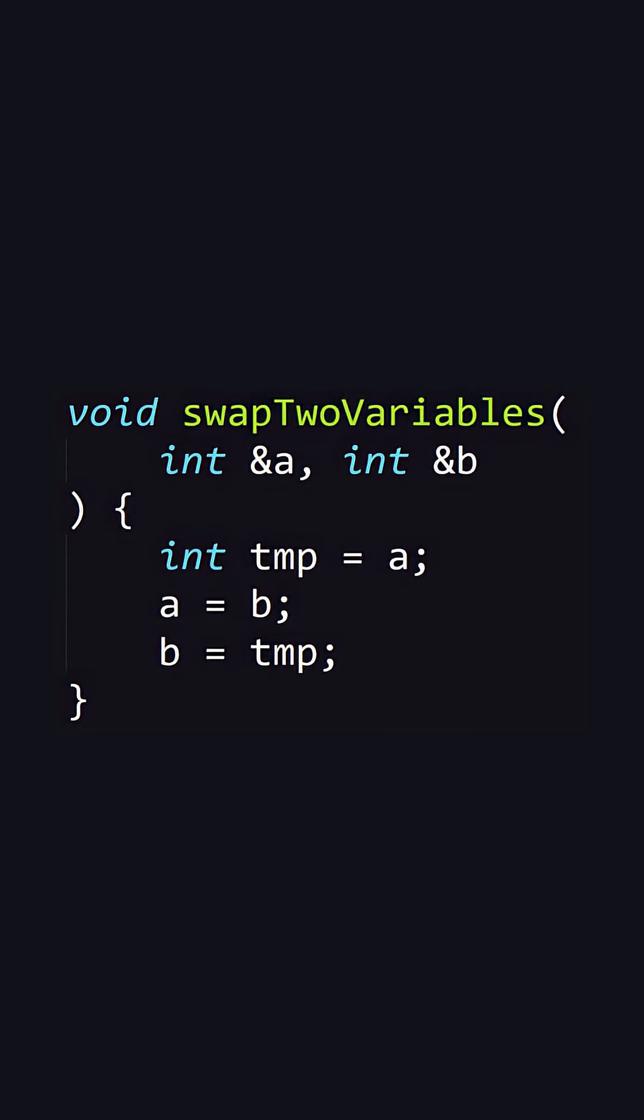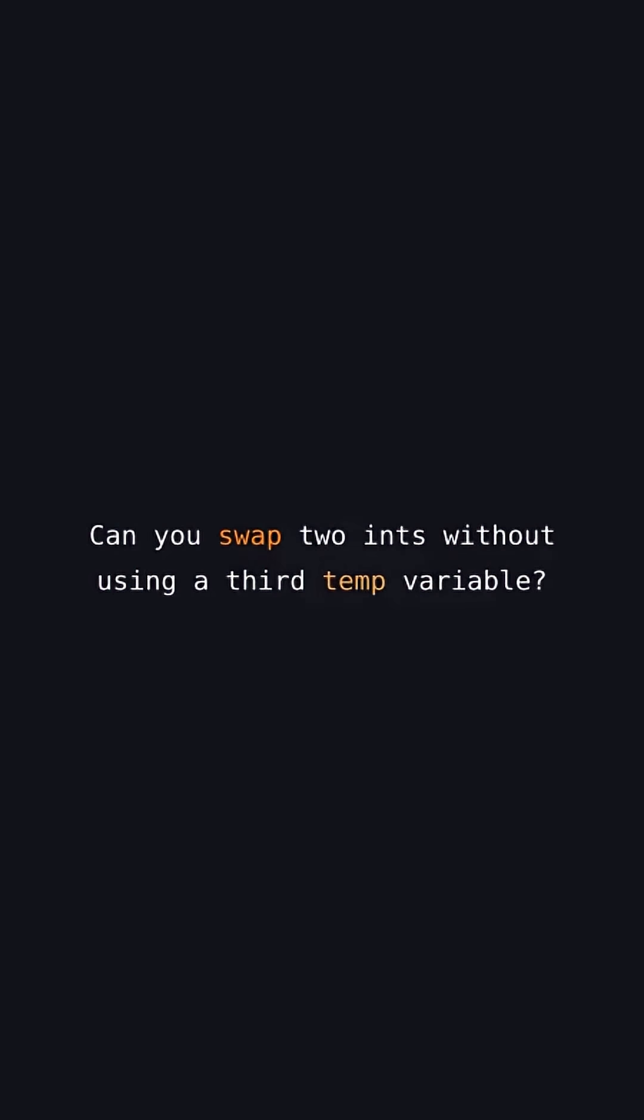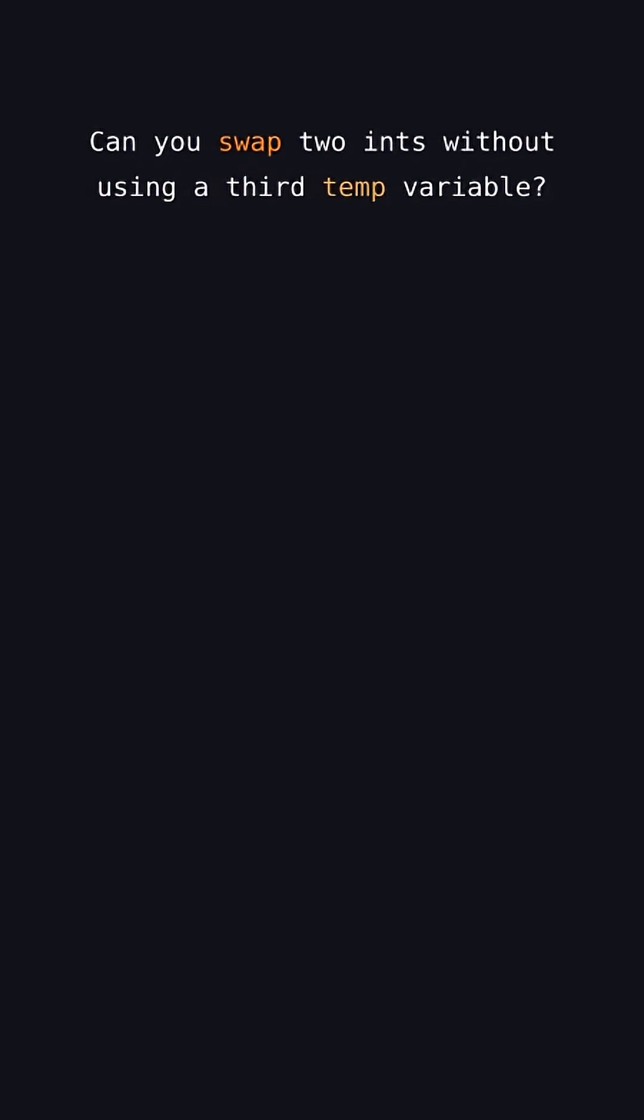Here's a fun puzzle. This is the typical way to swap two ints. But can you swap the two ints A and B without using a third temporary variable?